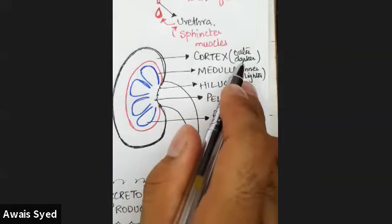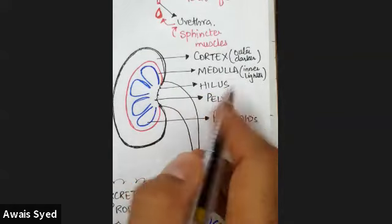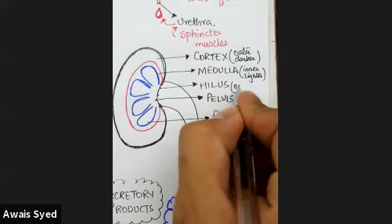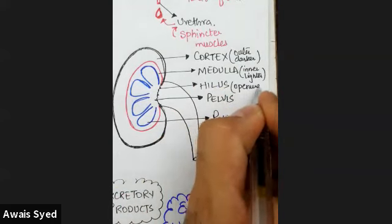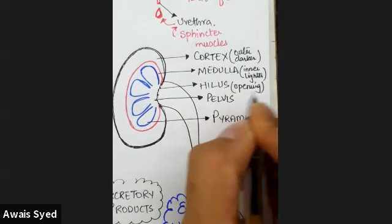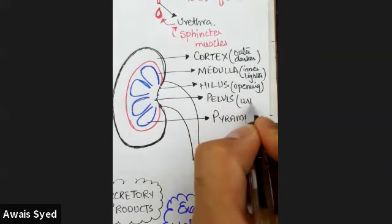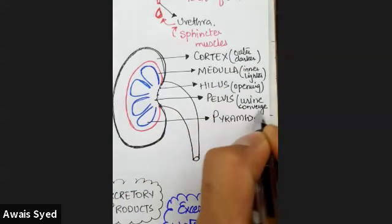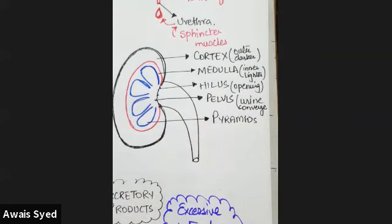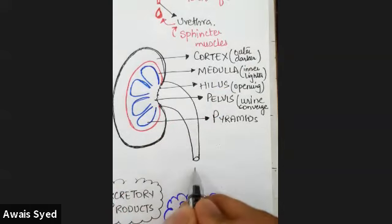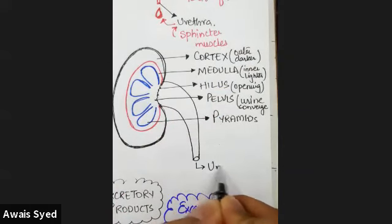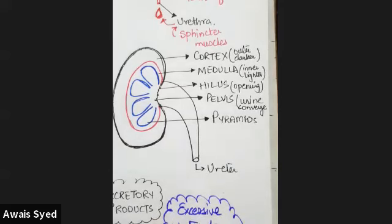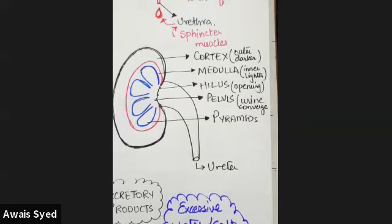The pyramids are located in the medulla and they converge the urine toward a converging point called the pelvis. So to summarize: the cortex is the outer darker region, the medulla is the inner lighter region, the hilum is the opening of the kidney, the pelvis is the funnel-shaped area where urine collects, and the pyramids are in the medulla. This is the internal structure of the kidney.